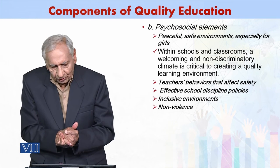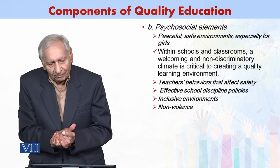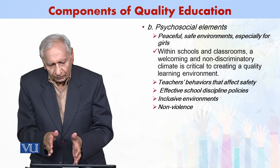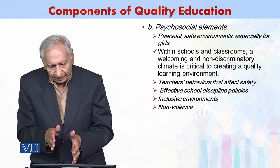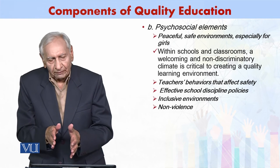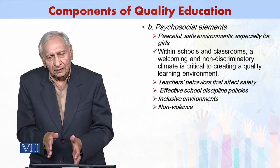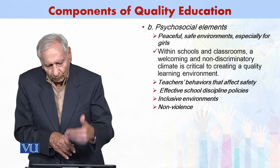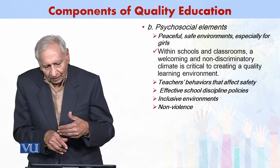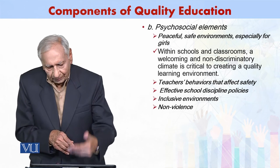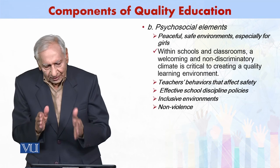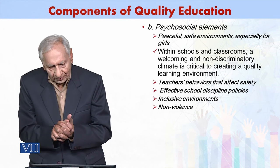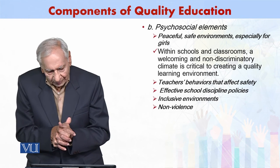Along with this, there are psychosocial elements: how peaceful and safe the environment is, particularly for girls — whether there is harassment, bullying, or discrimination. All these things are part of quality of education.